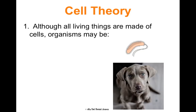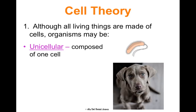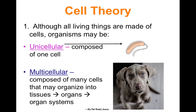Although all living things are made of cells, organisms can be two types. They can be unicellular, which means the organism is composed of only one cell — bacteria, for example, are just one cell. Whereas most organisms are multicellular, meaning they're composed of many cells. A puppy, or you — you're made of trillions of cells, organized into tissues, then organs, then organ systems, which all work together to make you function as an organism. All living things are made of either one cell or many, but regardless, they're made of cells.